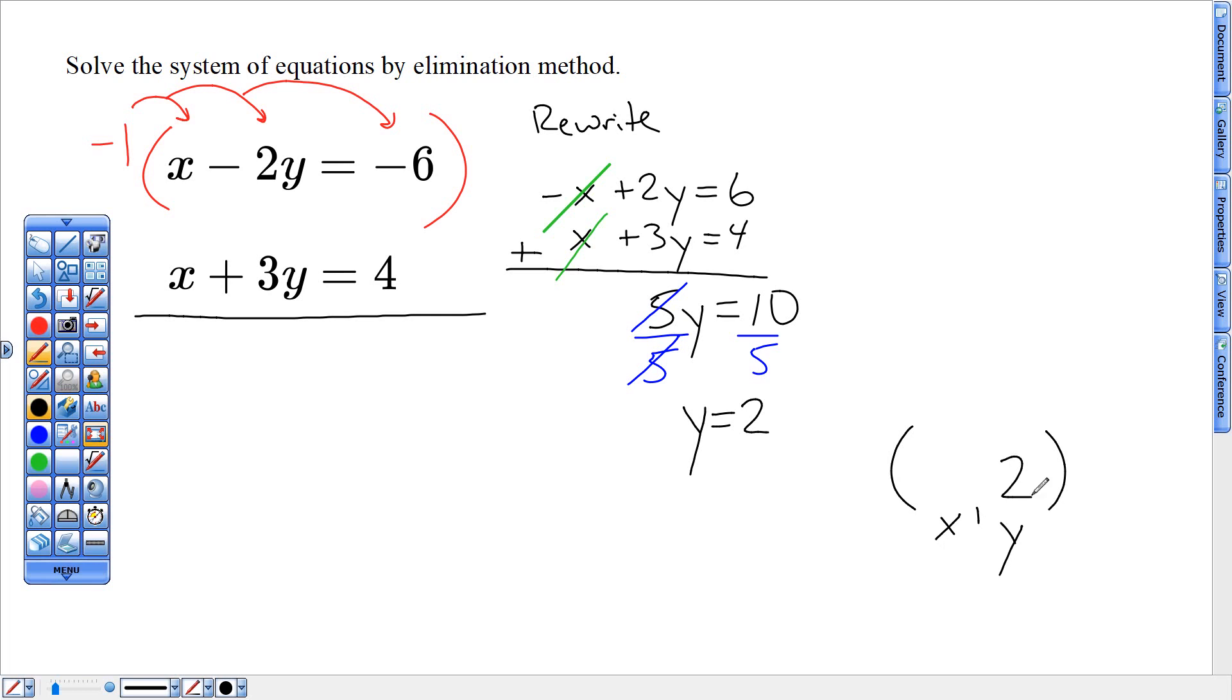Knowing that that goes in the y spot for your coordinate not the x spot, and then when I do my check or when I do the next part to find x I'm taking that y number which is two and plugging it in for y. So I have x plus three and where that y used to be I'm plugging in that two number which I know y is for the matching coordinate gives me four.